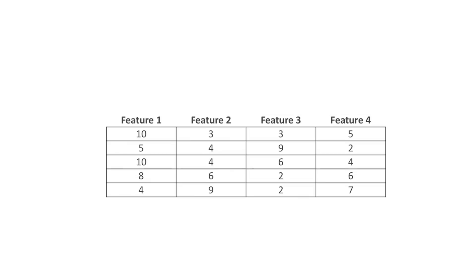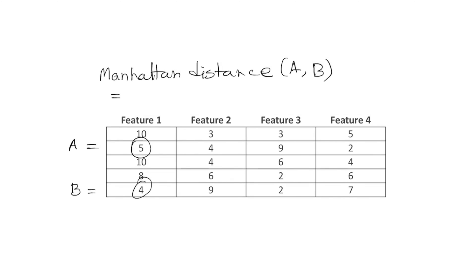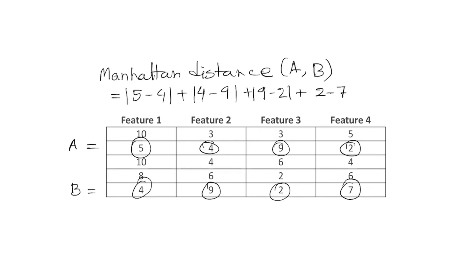As an example, let us assume that we have a four-dimensional dataset. Two vectors in this dataset are A equals (5, 4, 9, 2) and B equals (4, 9, 2, 7). Therefore, the Manhattan distance between A and B would be the absolute difference between 5 and 4, plus the absolute difference between 4 and 9, plus the absolute difference between 9 and 2, plus the absolute difference between 2 and 7, which results in 18.